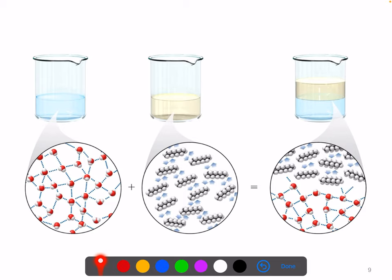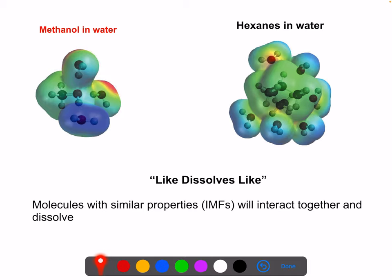The same idea shown in a different picture: a beaker of water showing the hydrogen bonding network between water molecules, and a glass of oil showing London dispersion forces between oil molecules. When you mix them, you get two layers, so as not to disturb the hydrogen bonding network or the London dispersion forces. This is the idea of like dissolves like.